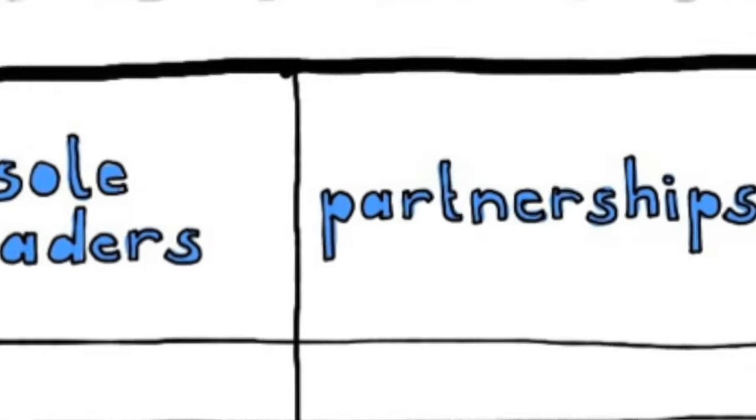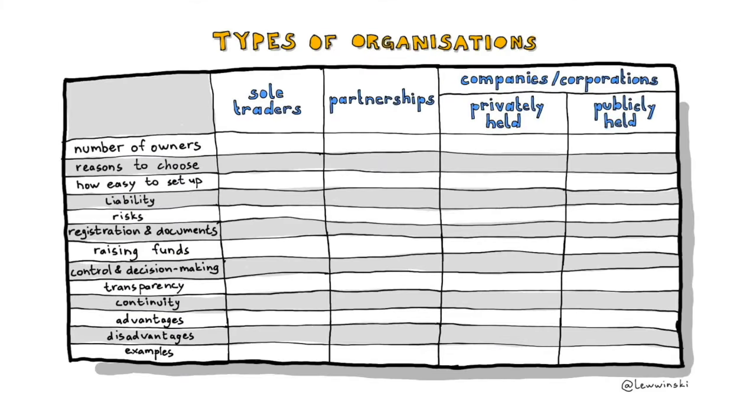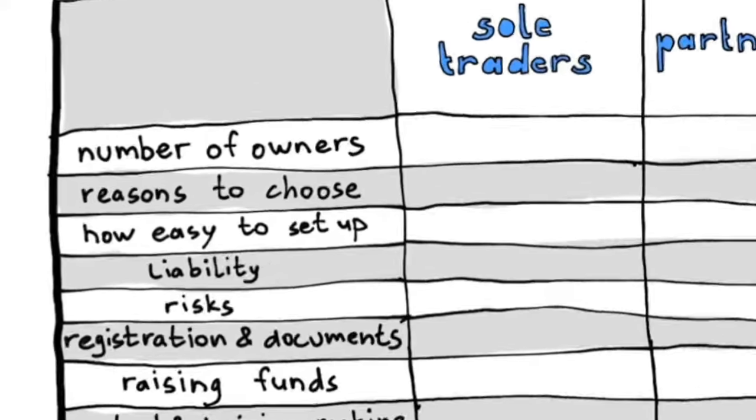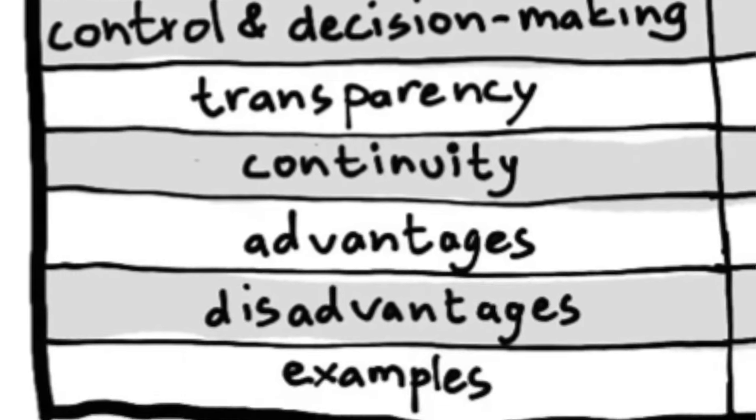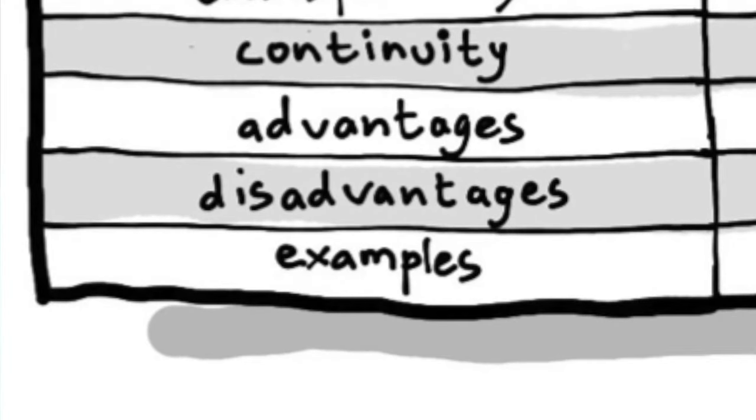Now you know all the important terms for evaluation — liability, legal identity, incorporation, transparency, accountability, and setup cost. You can use these words as criteria to make judgments between the four types of entities: Sole Traders, Partnerships, privately held and publicly held companies. In class I ask students to fill in a worksheet with four different types of business entities and a bunch of factors to compare them — number of owners, reason to choose, how easy to set up, liability, transparency, and so on.